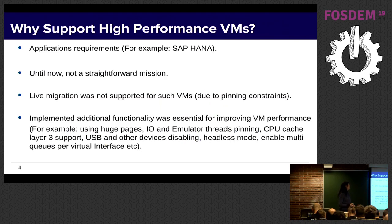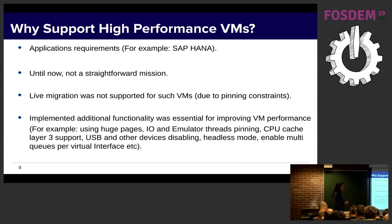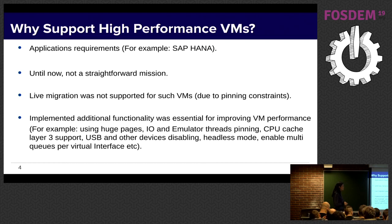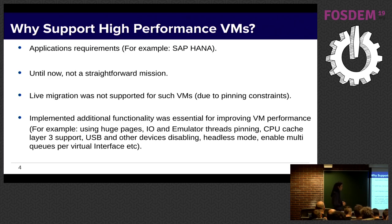Why did we add this feature? Why support High Performance VMs? First, application requirements. There are applications that require better performance than others. For example — and this example is taken from oVirt — SAP HANA. SAP HANA is an in-memory database management system that processes a huge amount of data in a short amount of time. SAP HANA could not run on oVMs, only on bare metal machines. They asked us to implement an easy way to create high performance VMs so they could run on oVirt VMs.